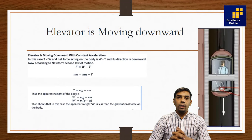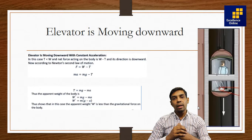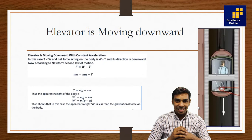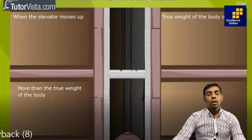So the apparent weight W' = mg minus ma. This clearly shows that the apparent weight is less than the actual weight by a factor of ma. We saw this demonstrated as the weight going from 84 to 80. So the conclusion for Case 1: when the elevator is moving downward, the apparent weight is less than the actual weight.